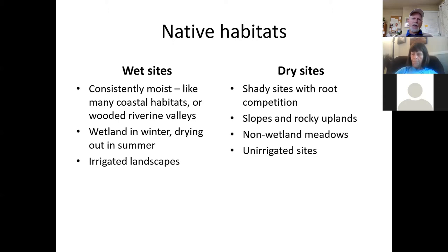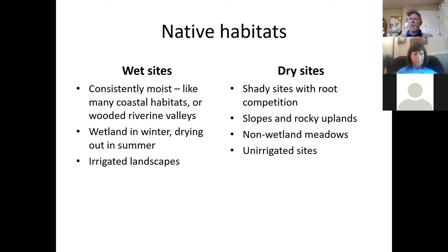Wooded river valleys tend to have a lot of humidity as well. In more open sites, wetland environments — we have a lot of wet prairie here on the valley floor, being restored in many locations. These can be very moist to seasonally flooded in winter, then dry out completely in summer, but they're still effectively wetland habitat because of the volume of moisture during parts of the season. Native plants adapted to wet locations do well in irrigated landscapes and are commonly used for home landscaping.